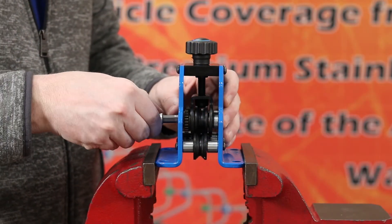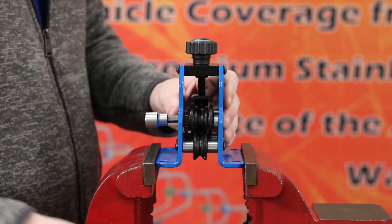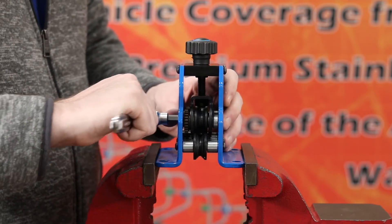Let's get started. First, insert the provided socket into the side of the tube straightener. Next, connect the ratchet into the socket.